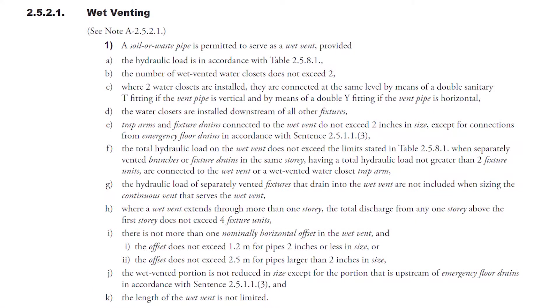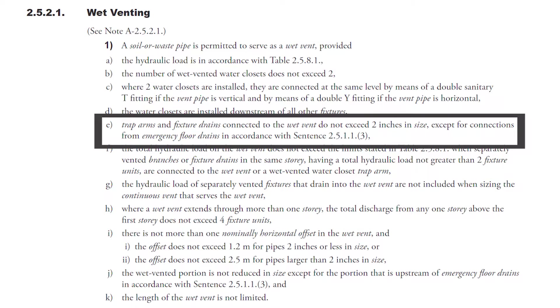Let's start with code clause 25211E. Trap arms and fixture drains connected to the wet vent do not exceed two inches in size, except for connections from emergency floor drains in accordance with sentence 25113.